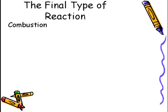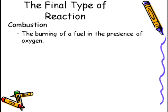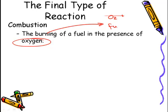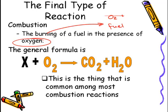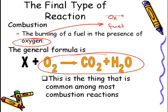Our final type of reaction is a combustion reaction. Combustion is the burning of a fuel in the presence of oxygen. This is going to be one of the key things, is that it's going to be adding, and we need oxygen. Remember, in order for something to burn, a fire needs oxygen, and it needs fuel. The general formula for a combustion reaction is something plus O2 yields CO2 plus H2O. This part, the O2 yields CO2 plus H2O is the thing that's common among most combustion reactions. If we see this, it's a good bet that you're dealing with a combustion.